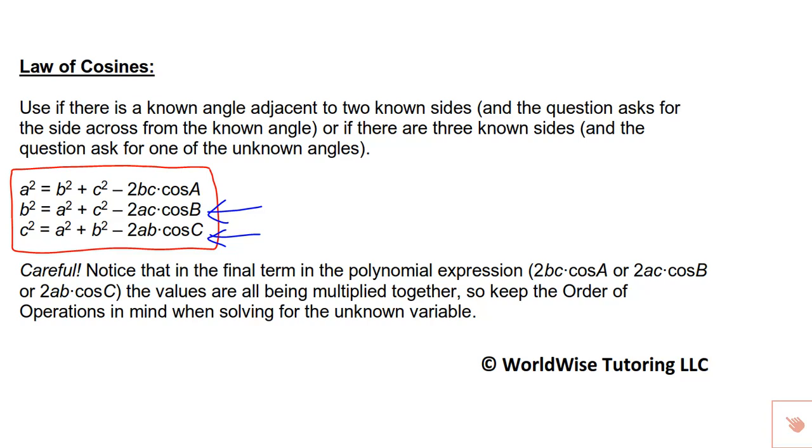When we're dealing with law of cosines, an indicator to let us know this is the rule we should be using is if we have an angle adjacent to two known sides. For instance, if I know angle A and I know side b and side c, that would indicate to me to use law of cosines. I do not have an angle-side pair here.